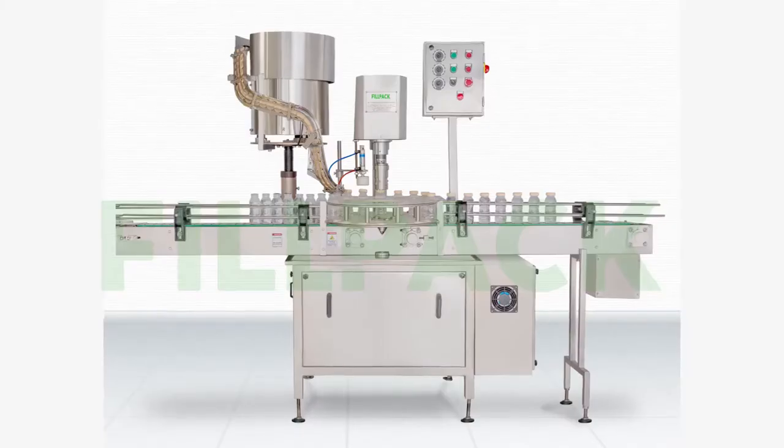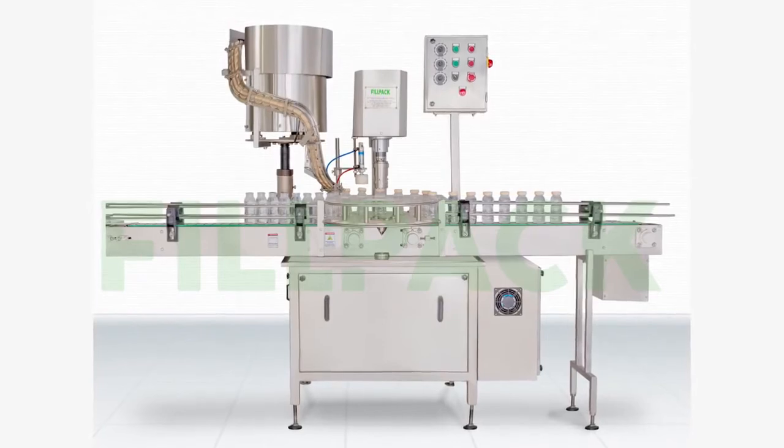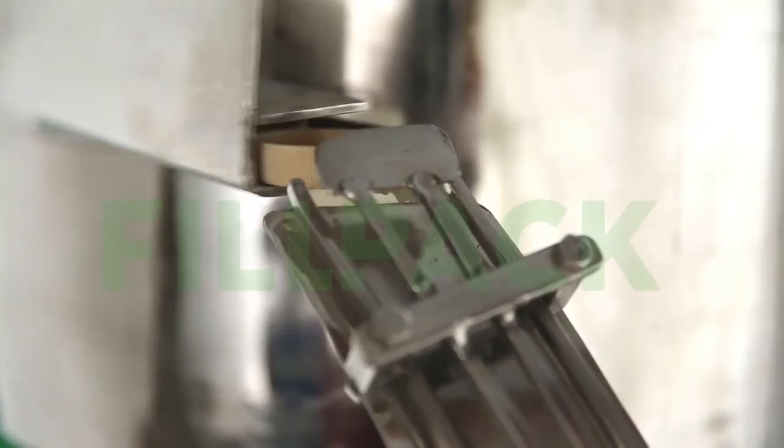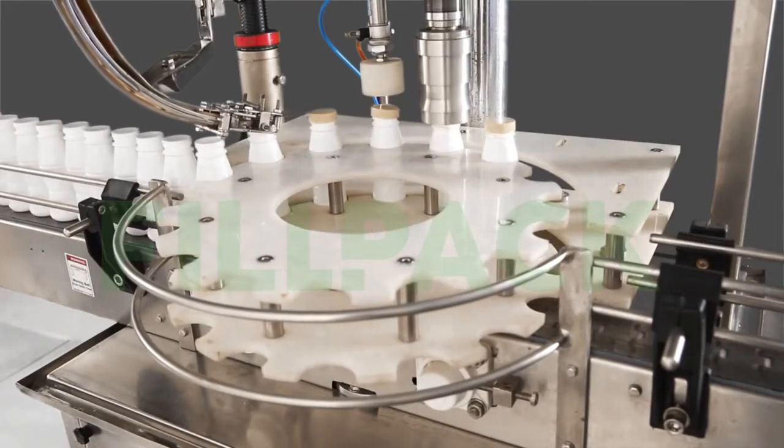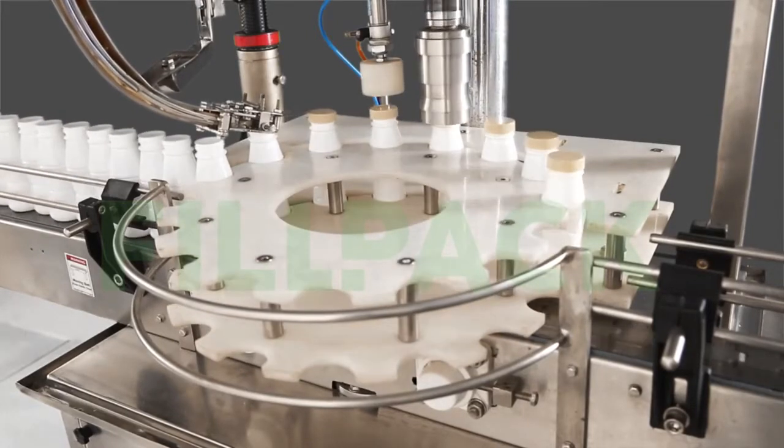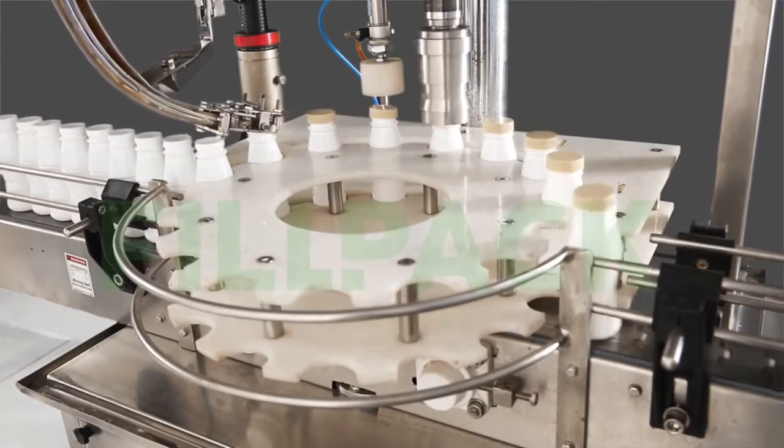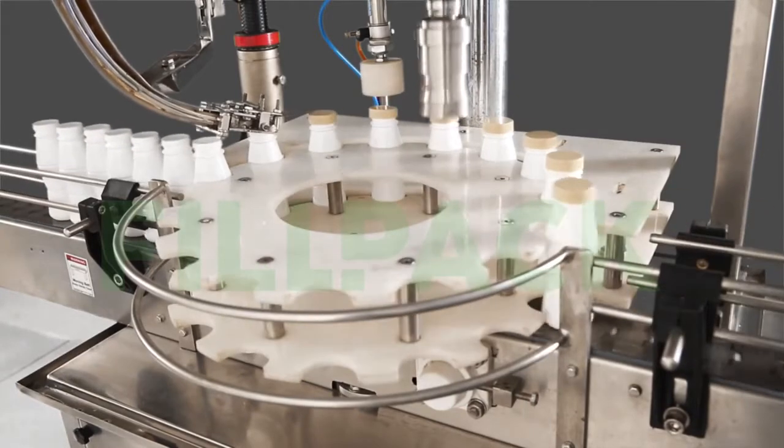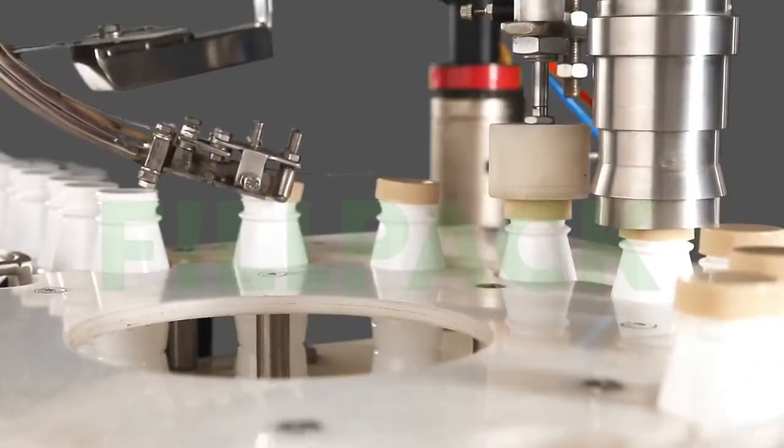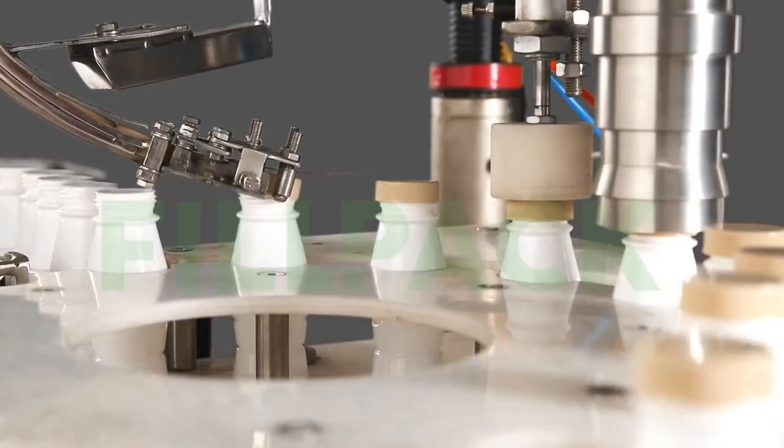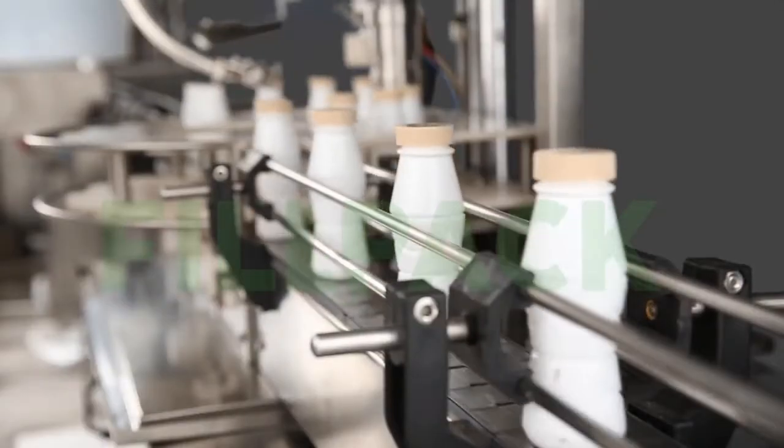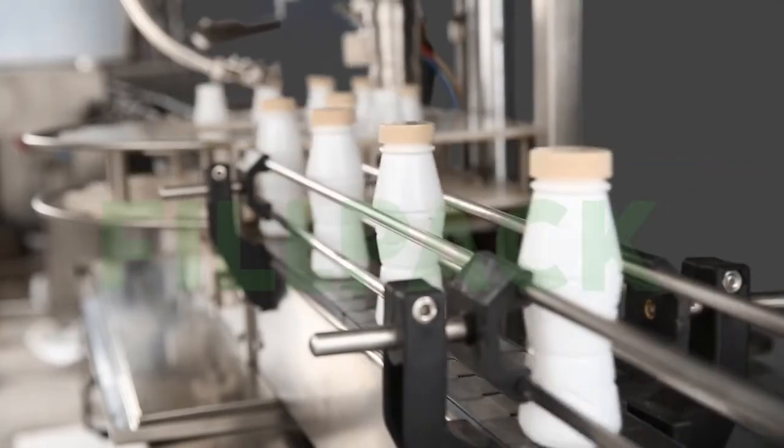Capping Machine: OK bottles received from the leak testing machine will go for capping. Here, caps will be fed through a vibrator bowl on the top of the bottles. Then, these caps will be hammered by nylon bushes for proper fitting on the necks of the bottles. The bottles will be capped with the help of a flexible collet driven by an air motor.